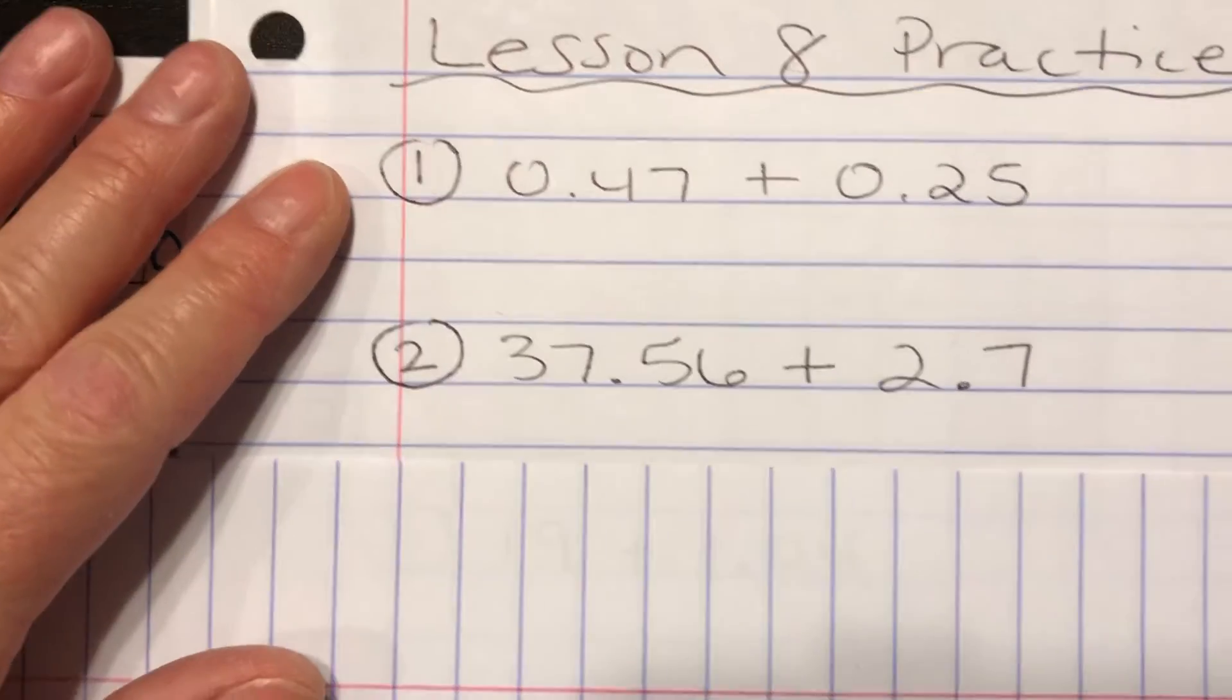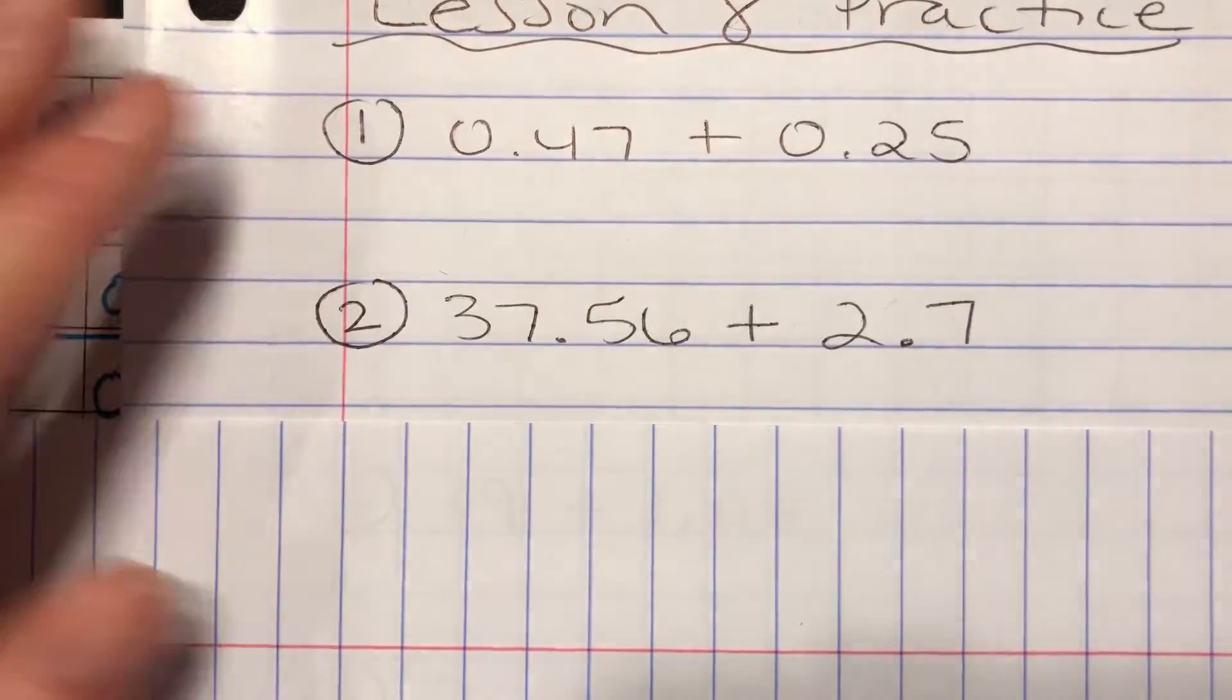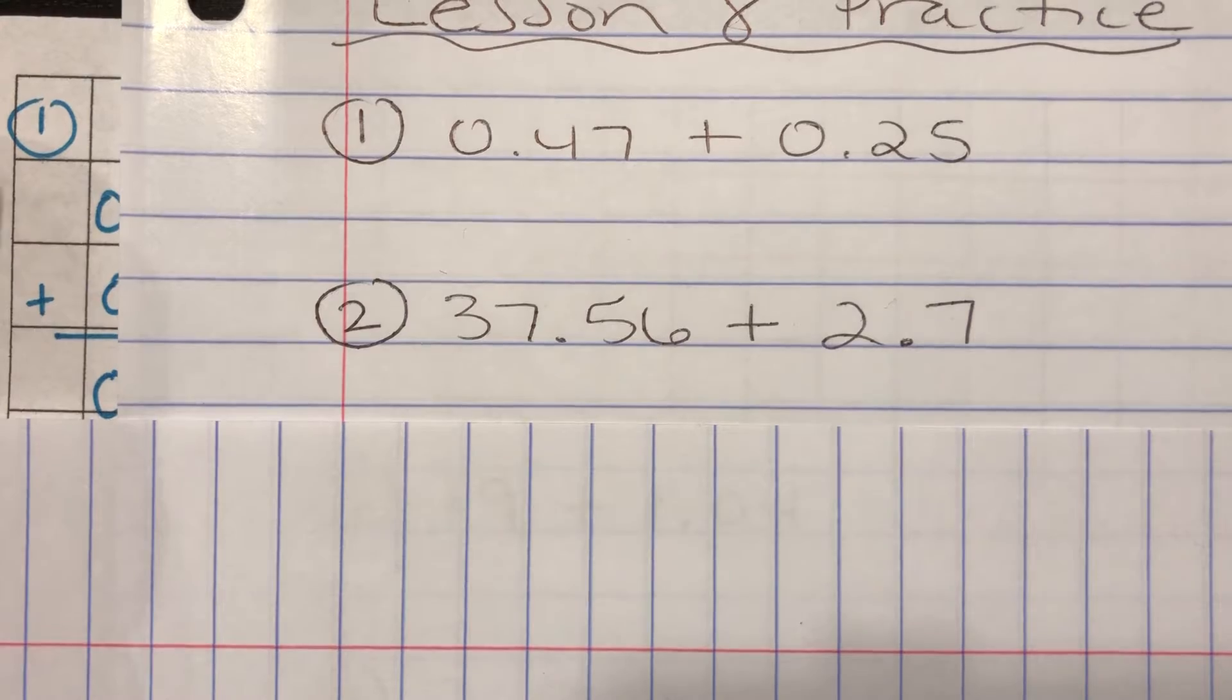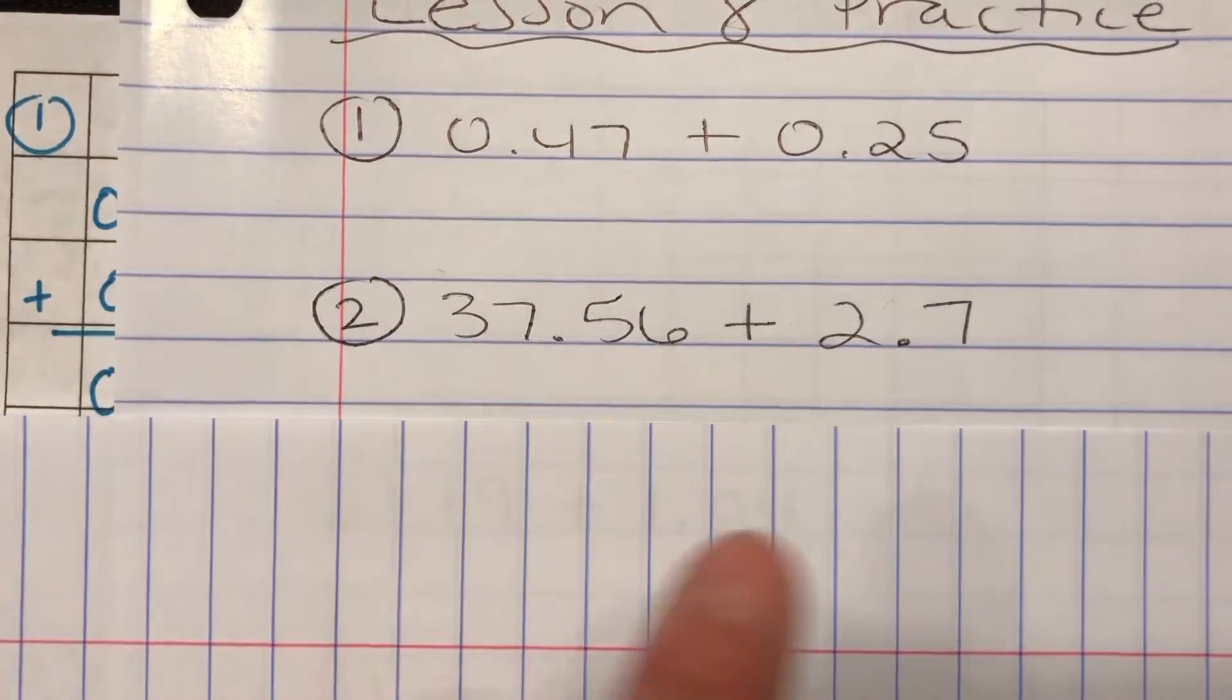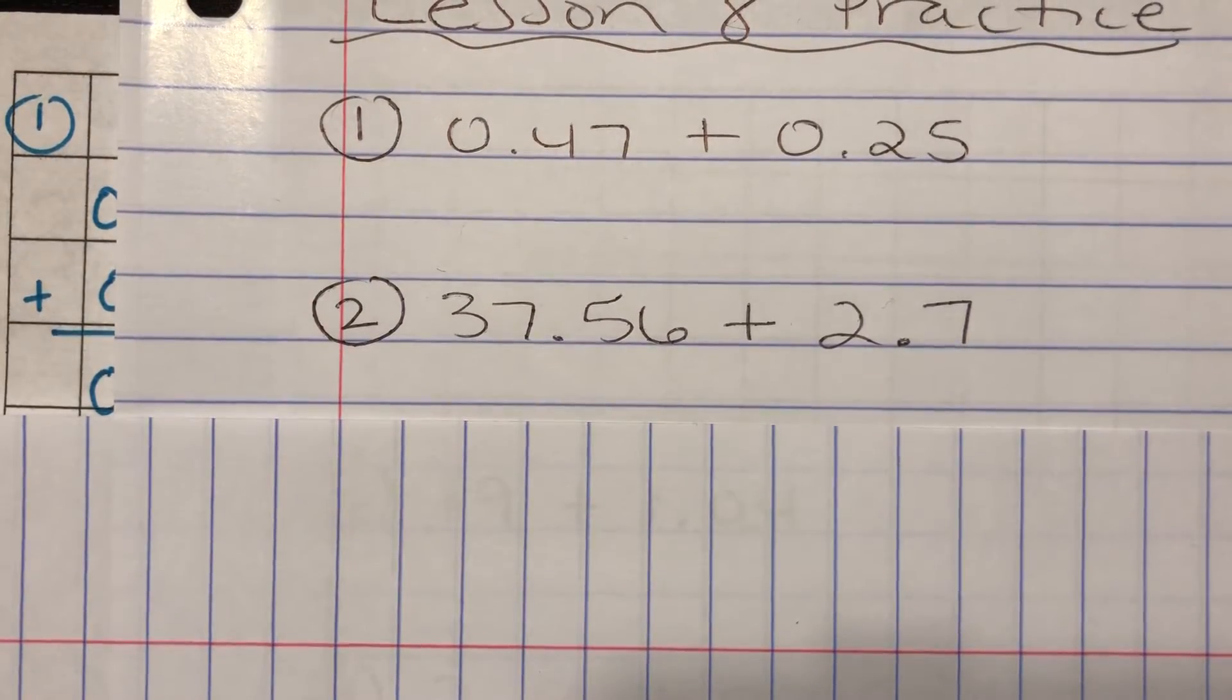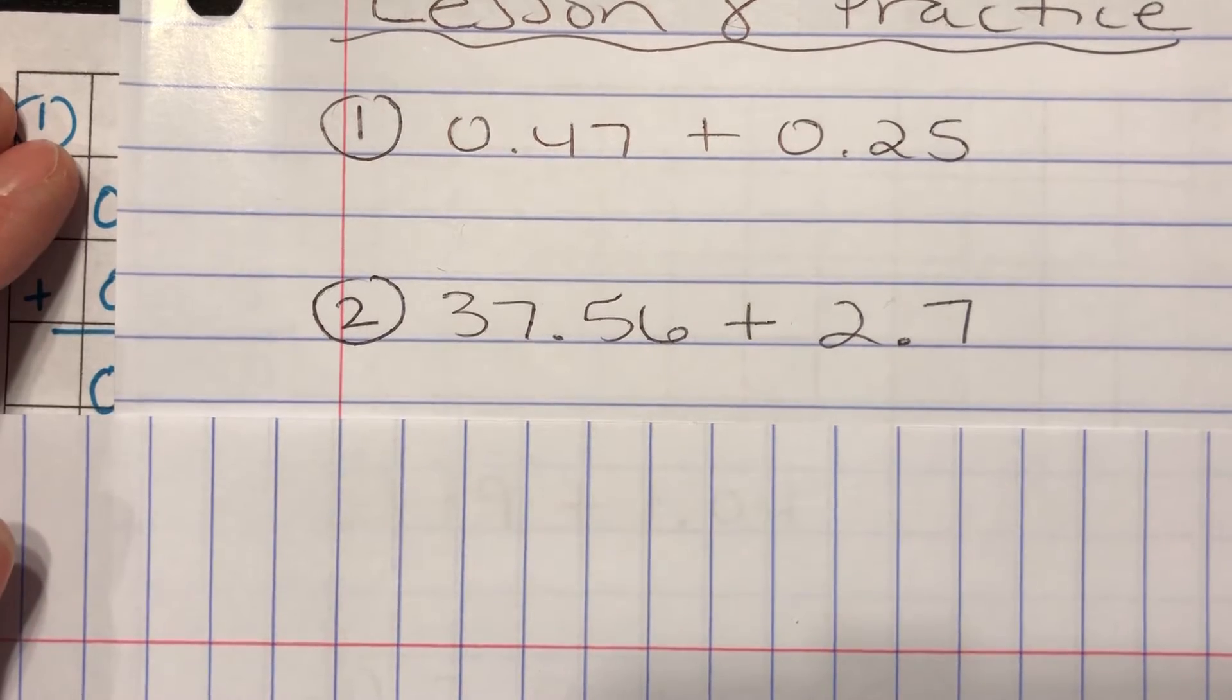Problem number two. 37.56 plus 2.7 and I'm writing these like this because I want you to be able to set them up vertically in case you're wondering why I'm going back and forth. Alright so press pause, solve it.